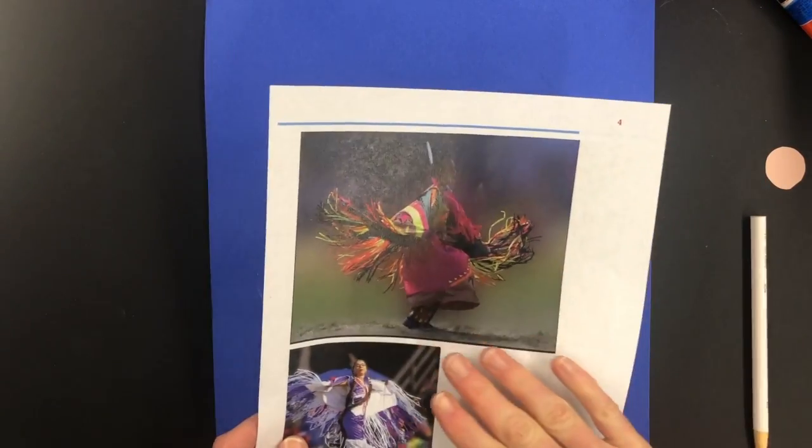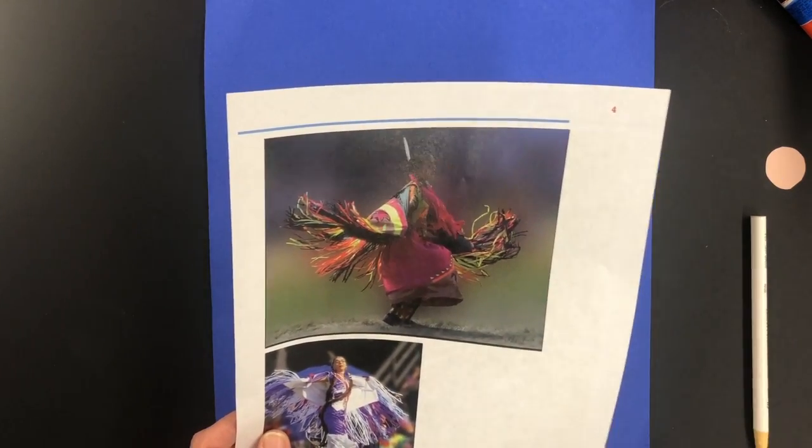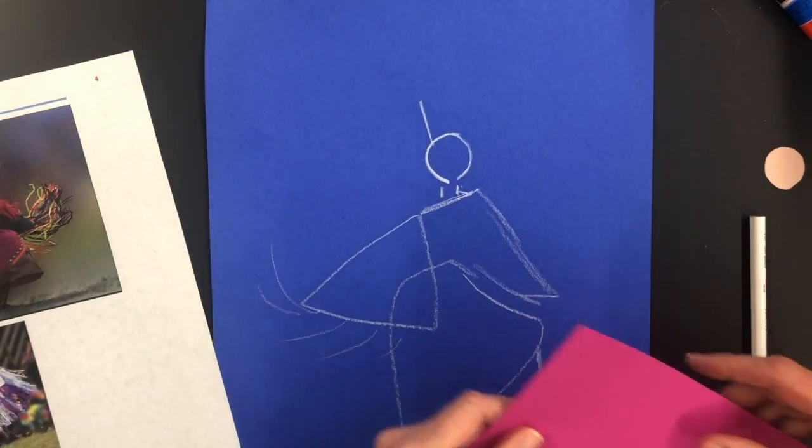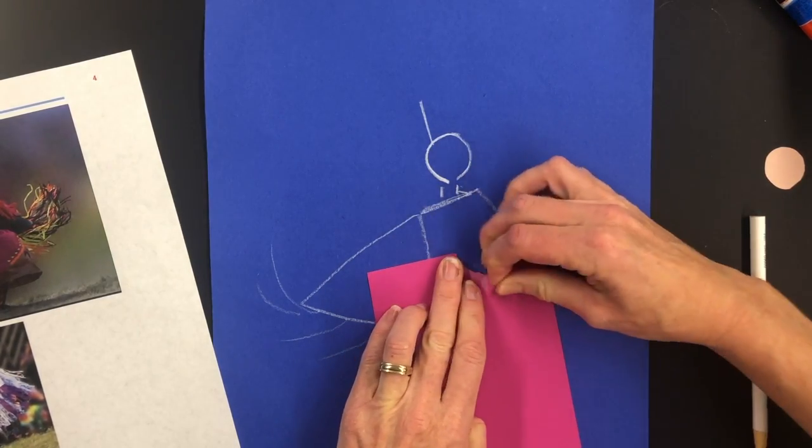What you're going to use to replicate this is torn paper. So again, you're going to find some paper either from a magazine, but look for the colors you want. And I'm just going to kind of lay this here and tear.